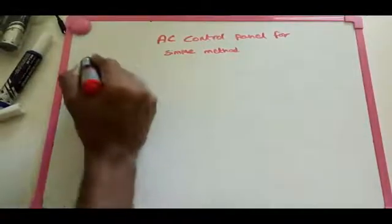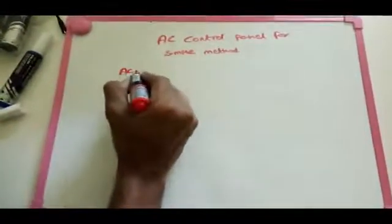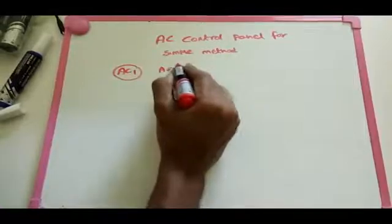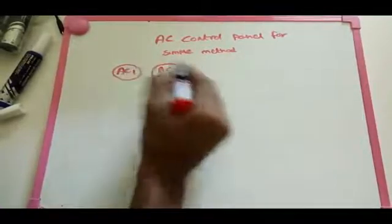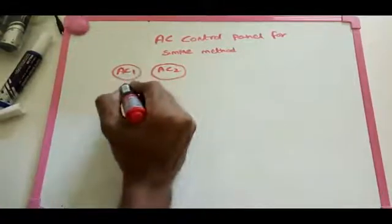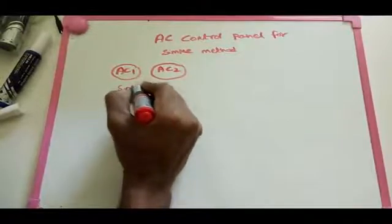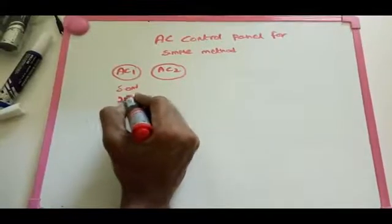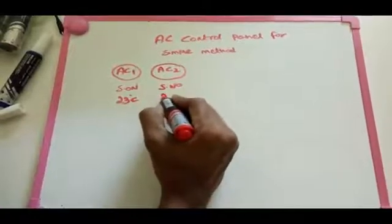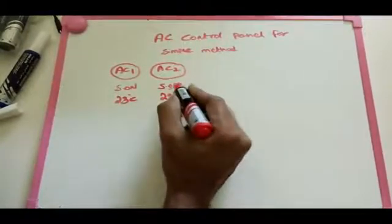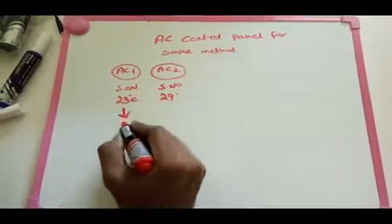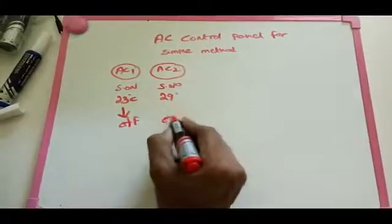For example, we take two ACs for a shopping mall — AC1 and AC2. These two ACs are switched on based on the temperature inside the shopping mall. For example, AC1 switches on at 23 degrees Celsius and AC2 switches on at 29 degrees Celsius. Based on these two temperatures, we need to switch on the ACs.